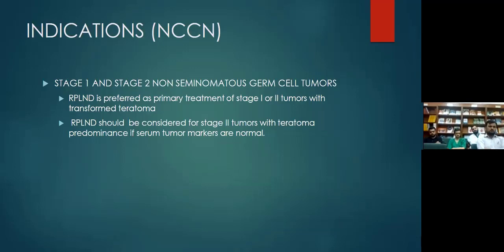The indications of RPLND according to NCCN guidelines of 2020 are stage one and stage two non-seminomatous germ cell tumors. It is the primary treatment of stage one or two tumors with transformed teratoma, and stage two tumors with teratoma predominance if the serum tumor markers are not elevated.